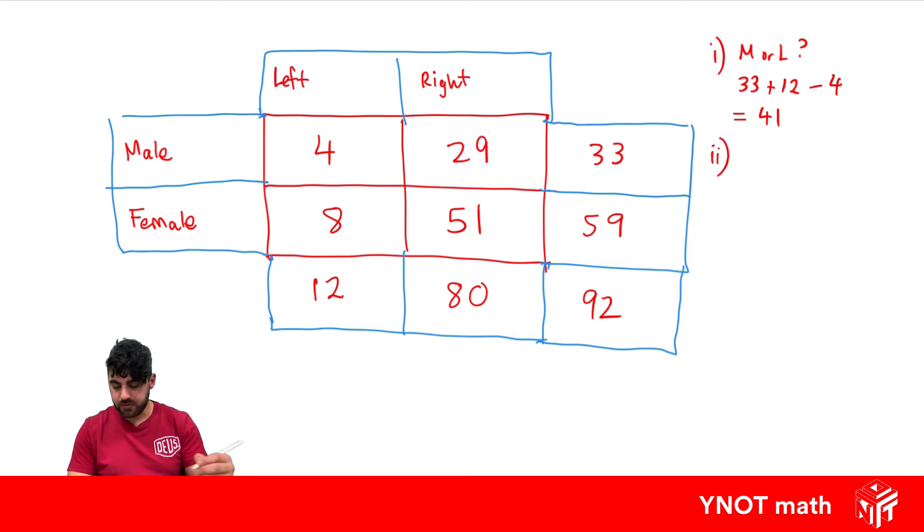Next question: What's the probability that someone randomly selected is a left-handed female? We need to work out how many left-handed females there are. There are 8 left-handed females, and we put that over the total number of people, which is 92. This simplifies to 2 out of 23.